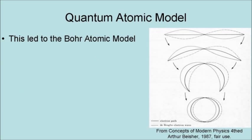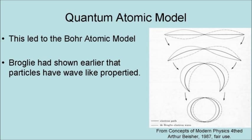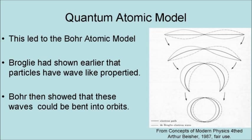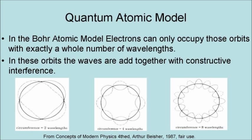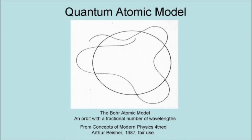This led to the Bohr atomic model. Bohr had shown earlier that particles such as electrons have wave-like properties. Bohr then showed that these waves could be bent into orbit, like those expected for an electron. Bohr further showed that electrons can only occupy those orbits with exactly a whole number of wavelengths. In these orbits, the waves are added together with constructive interference. A fractional number of wavelengths would destructively interfere and not persist when an electron cannot occupy such an orbit.